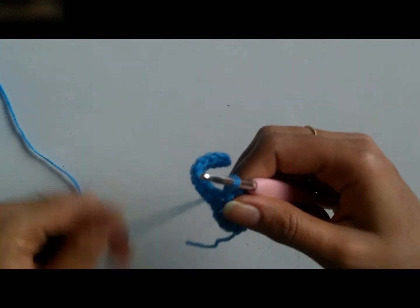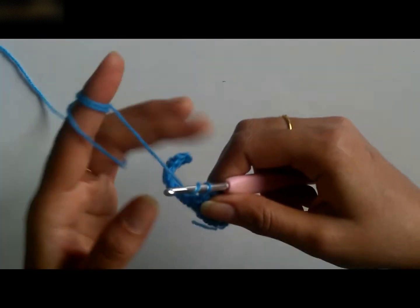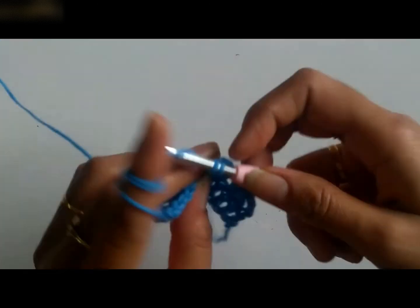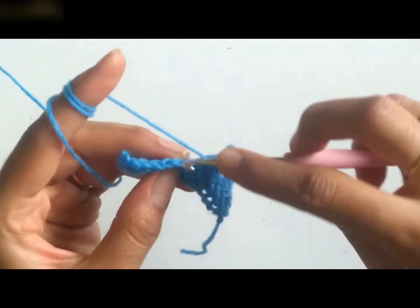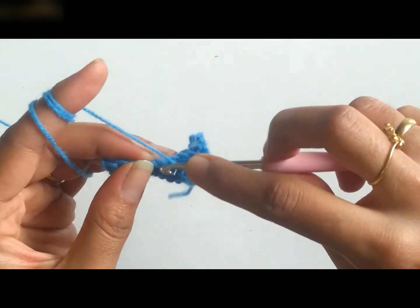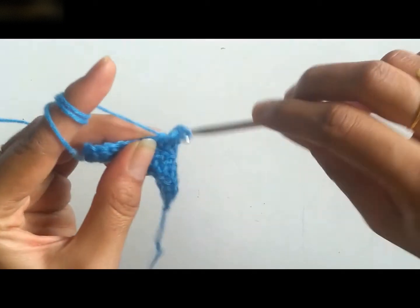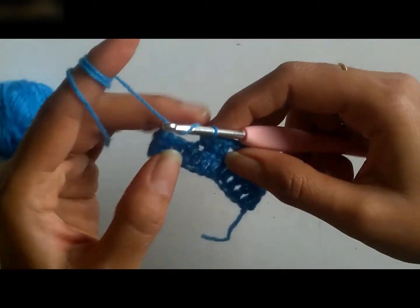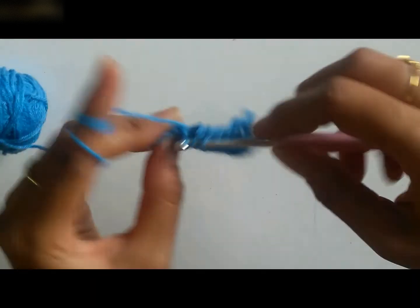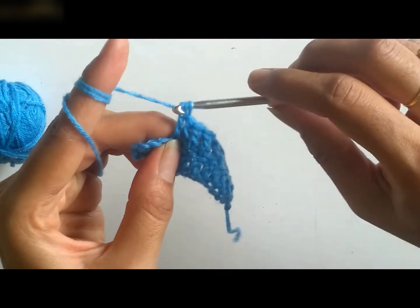Again I shall skip one stitch and make three double crochets into next three stitches. Again I am skipping one stitch and working a V-stitch into next stitch.